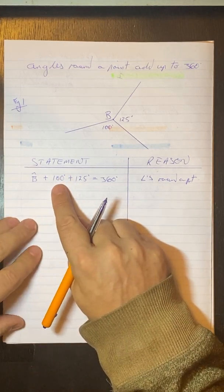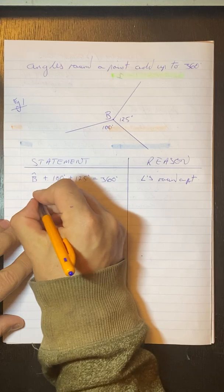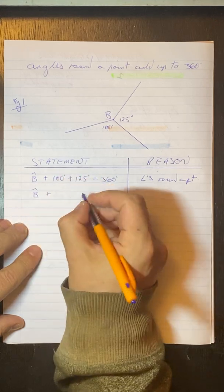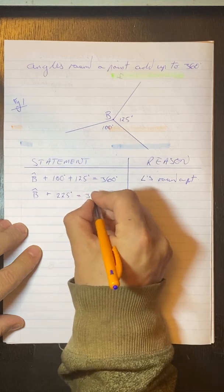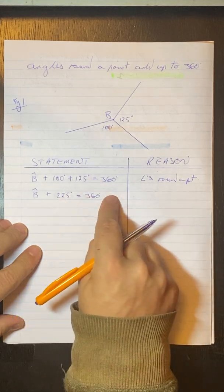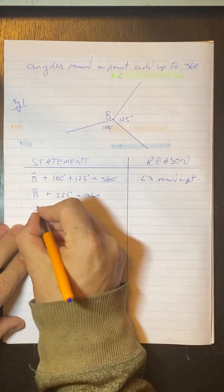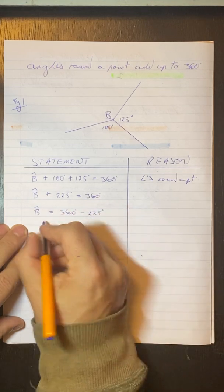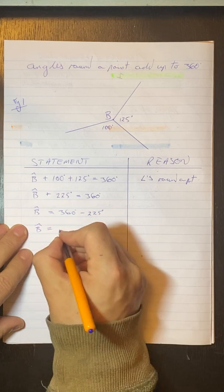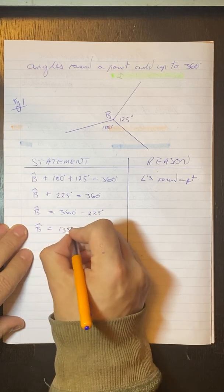So this is a simple equation. This gives us B plus 225 is equal to 360. Take that to that side, it becomes a minus, and we get angle B is equal to 360 minus 225. So that means this angle B must be equal to 135 degrees.